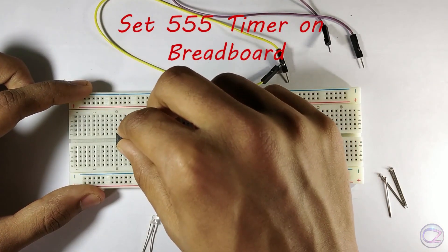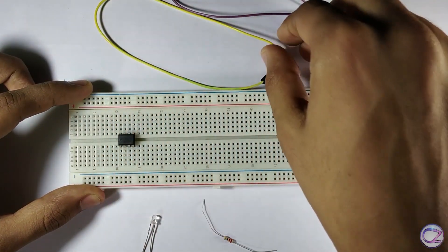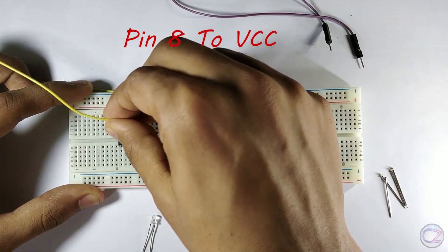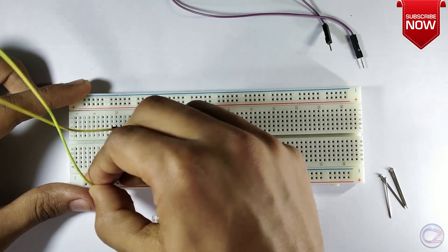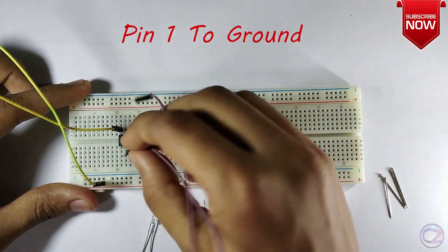Set the 555 timer IC on the breadboard. Connect pin 8 to VCC. Pin 1 to ground.